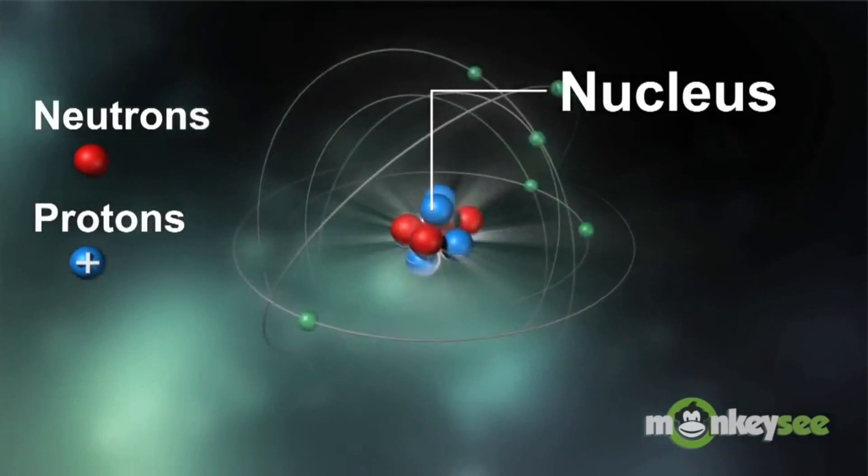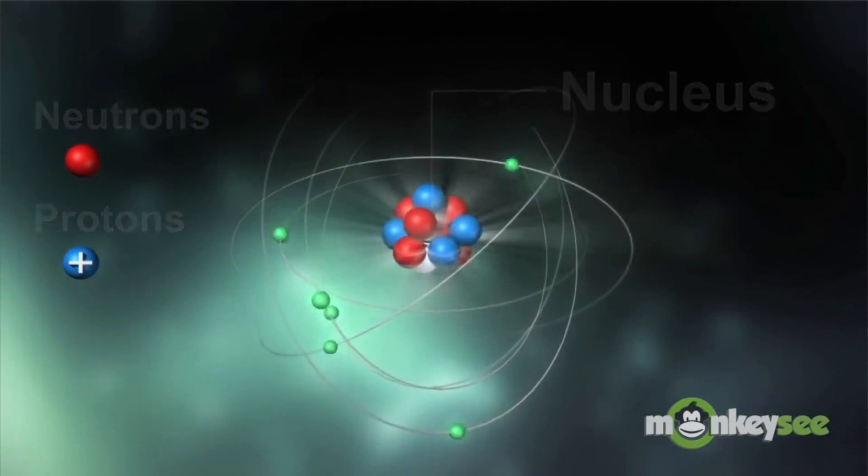Later came Niels Bohr, who agreed with the planetary model, but noticed some flaws with it. Using the knowledge of energy and quantum physics, he created the current model, the Rutherford-Bohr model.